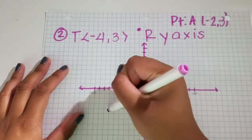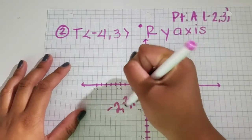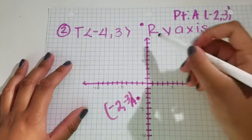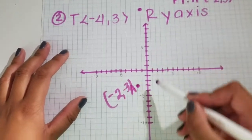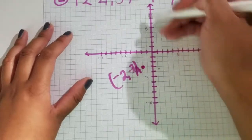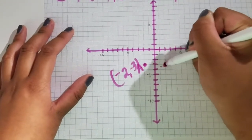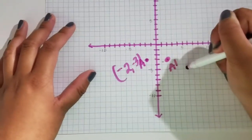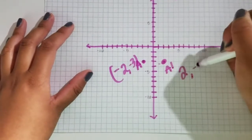That is A. Then you want to reflect on the y-axis. That gives you (2,-3), so that is A prime.